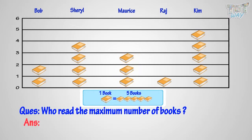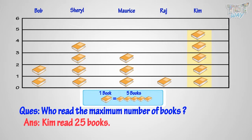Who read the maximum number of books? There are five book symbols against the name of Kim, which is the most of all. One book stands for five books here, so Kim read five times five equals twenty-five. Kim read twenty-five books, which is the most of all.